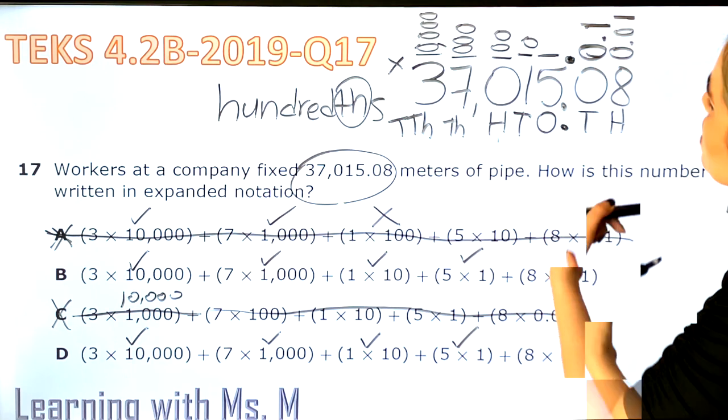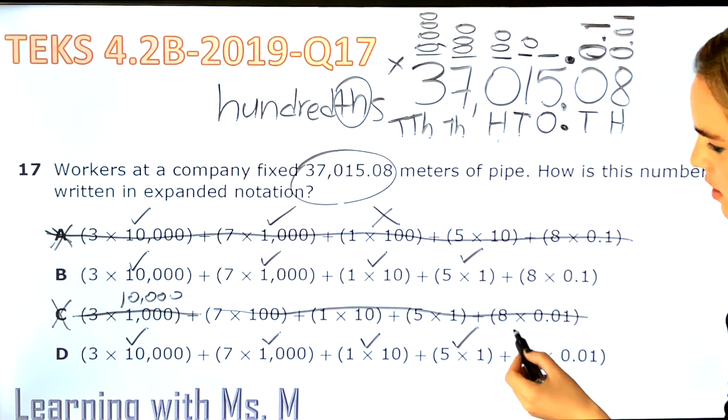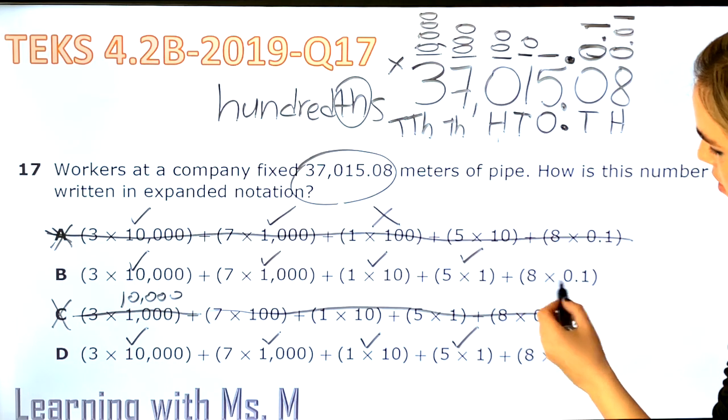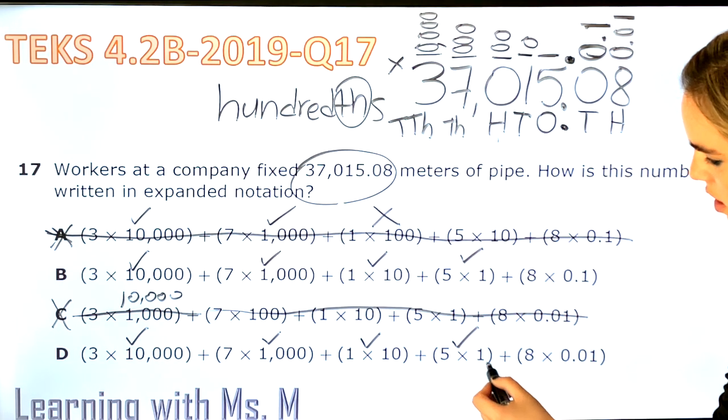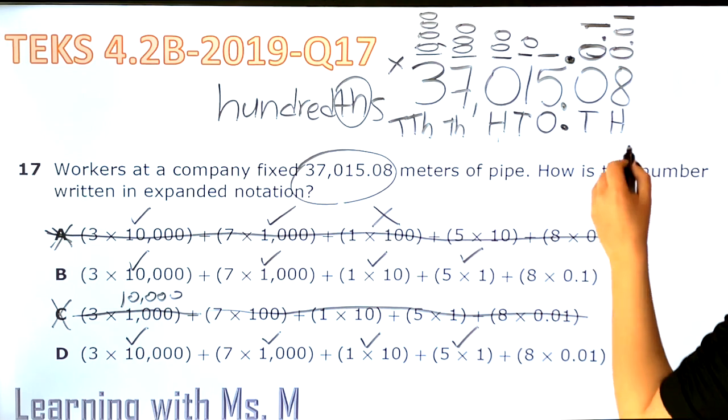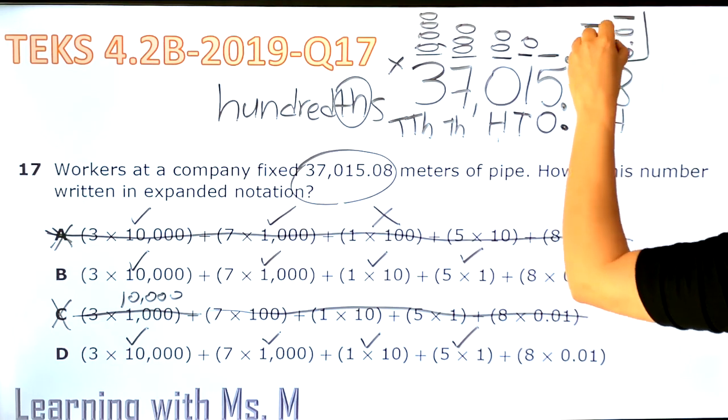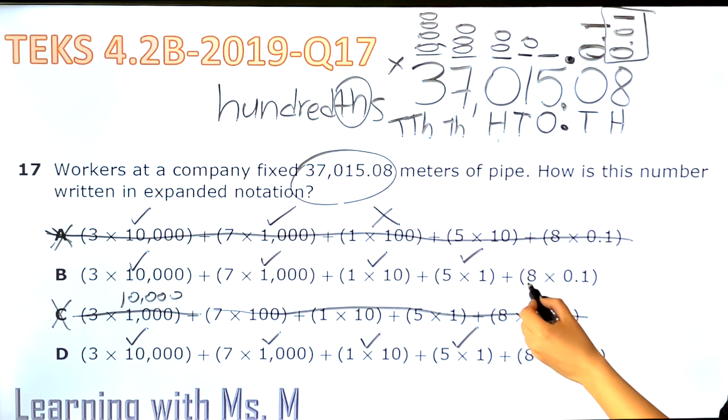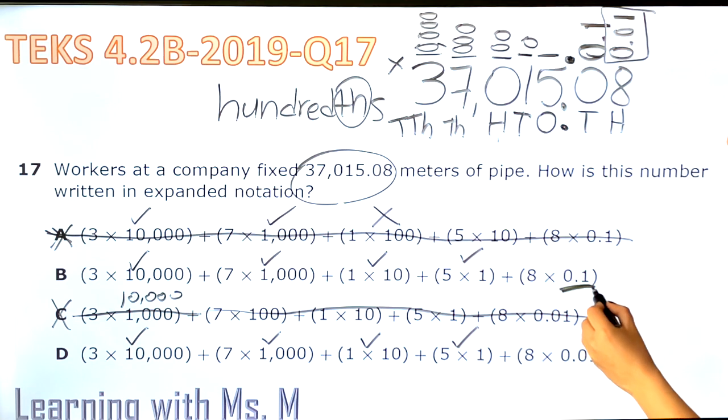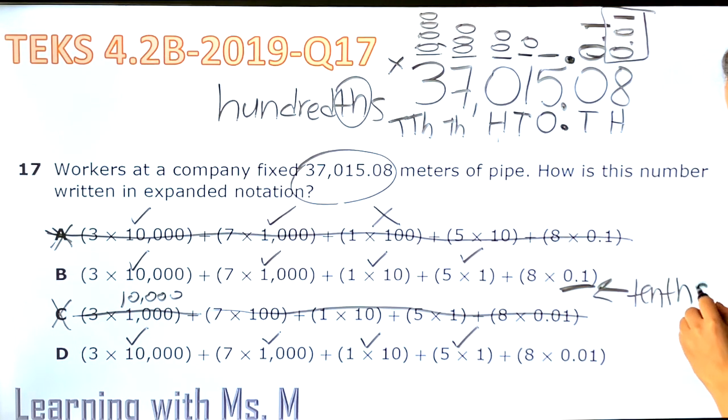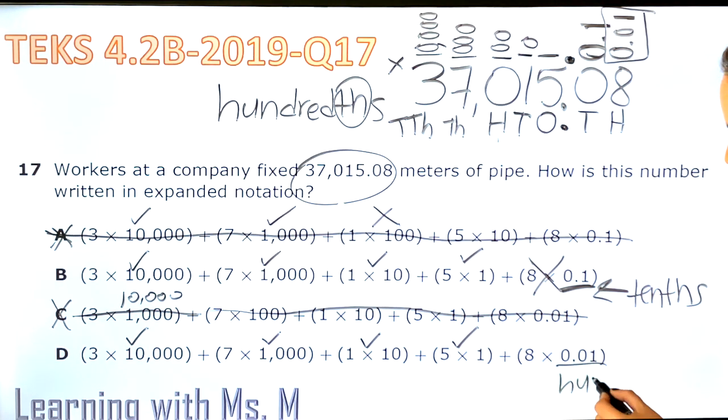And now we have the decimals: 0 groups of 0.1. Okay, so nothing here, nothing here. And now we have 8 groups of 0.01. Here we have 8 groups of 0.1—these, boys and girls, are tenths. So that is wrong. We're looking for 8 groups of hundredths.